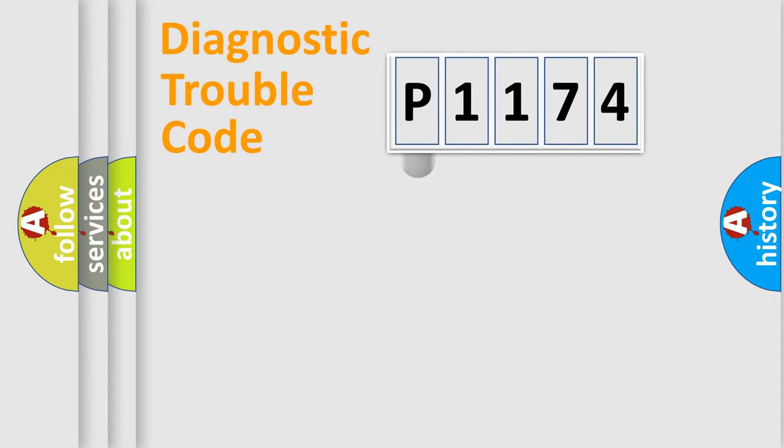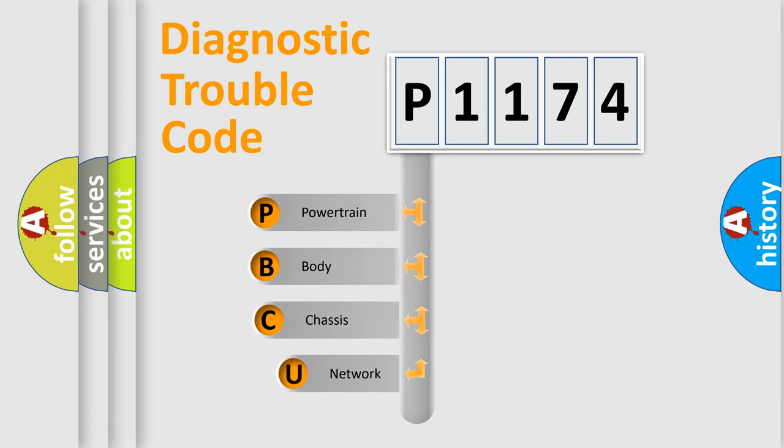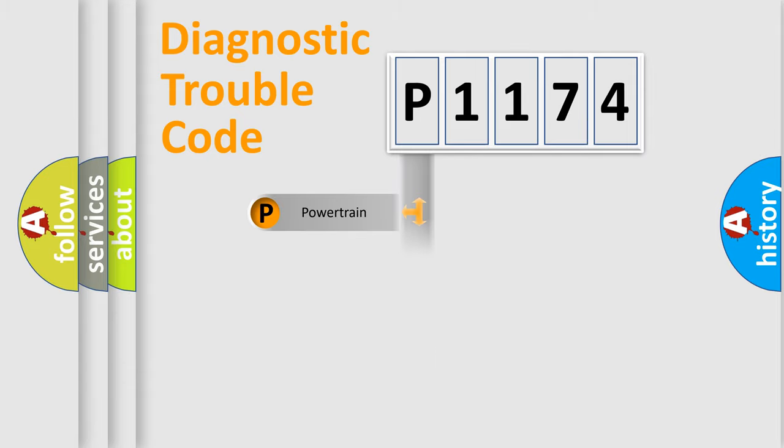First, let's look at the history of diagnostic fault code composition according to the OBD2 protocol, which is unified for all automakers since 2000. We divide the electric system of automobile into four basic units: Powertrain, Body, Chassis, Network. This distribution is defined in the first character code.